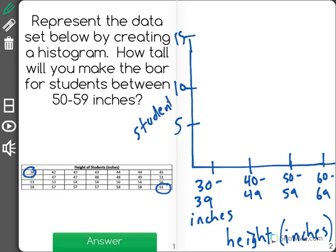I'm going to look through and see how many students fall under each category. For 30 to 39, there's only one student within that range, so my bar here will only be one high.